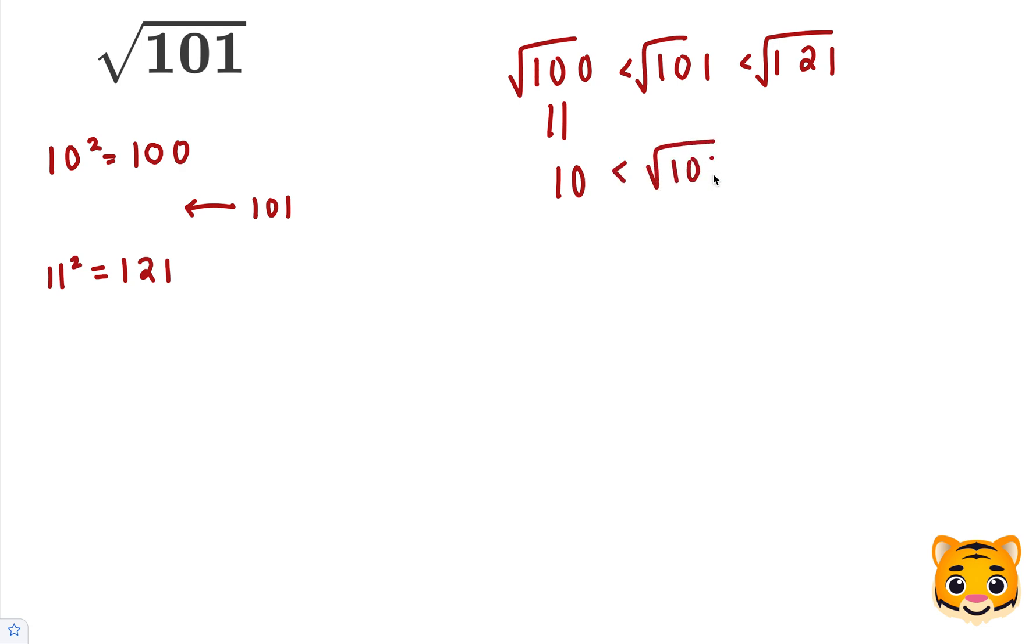because 10 squared is 100. Taking the square root of 121 gives us 11, because 11 squared is 121. Now we can see that the square root of 101 lies between 10 and 11.